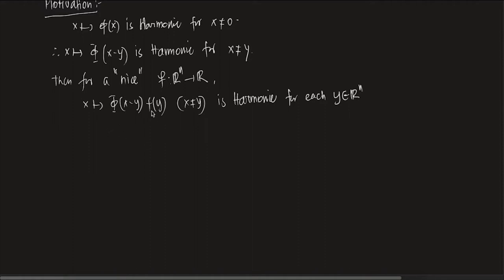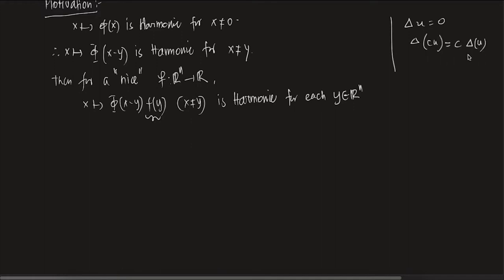If Δu = 0, then Δ(c·u) = 0 as well, because Laplacian is linear. So this c here is f(y). So essentially what is happening is we are saying that this kind of function has to be harmonic. Now, if it is harmonic, then there is a reasoning: if you just integrate it over ℝⁿ, this should solve the Laplace equation.